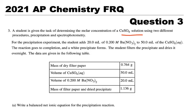A student is given the task of determining the molar concentration of a copper sulfate solution using two different procedures, precipitation and spectrophotometry. For the precipitation experiment, the student adds 20 milliliters of 0.2 molar barium nitrate to 50 milliliters of the copper sulfate solution. The reaction goes to completion and a white precipitate forms. The student filters the precipitate and dries it overnight and the data are given in the following table.